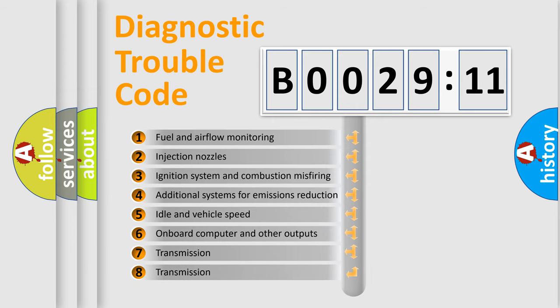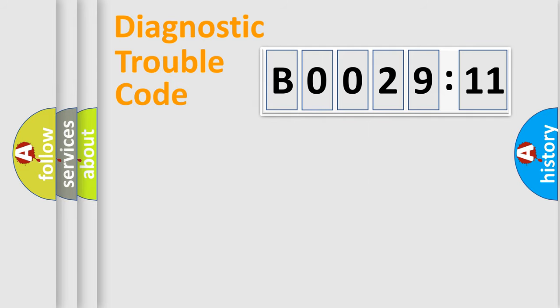The third character specifies a subset of errors. The distribution shown is valid only for the standardized DTC code. Only the last two characters define the specific fault of the group.